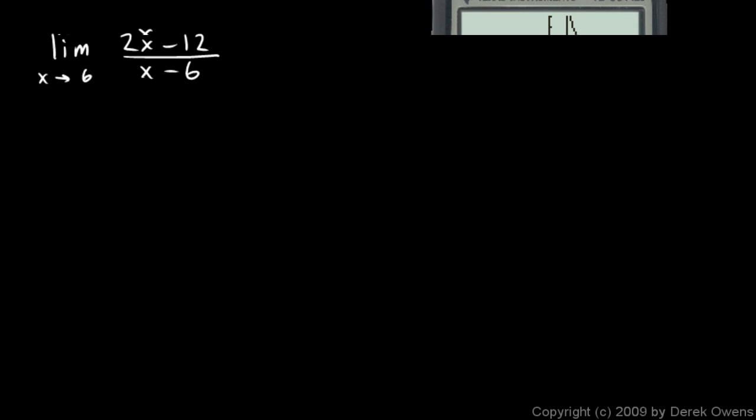So let's try to simplify this, and this simplifies pretty easily. This will be the limit as x approaches 6. We can just factor out the 2 up here, and we get 2 times x minus 6 over x minus 6, and that's it. You cancel those, and as x approaches 6...